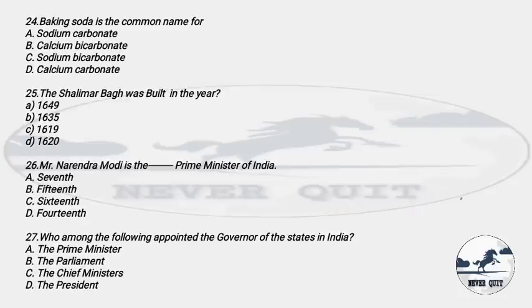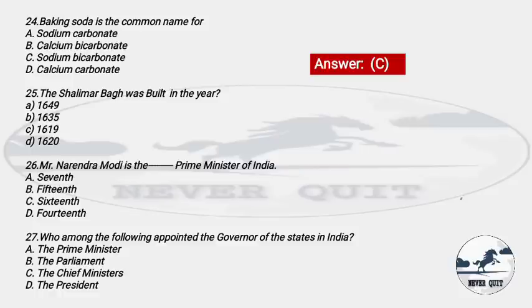Question 24: Baking soda is the common name for — Options: A) Sodium carbonate, B) Calcium bicarbonate, C) Sodium bicarbonate, D) Calcium carbonate. The right answer is option C — Sodium bicarbonate.